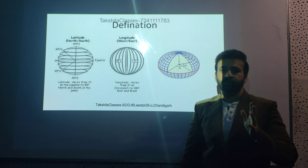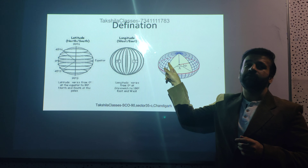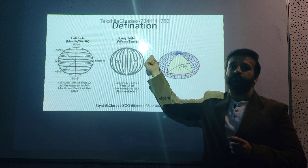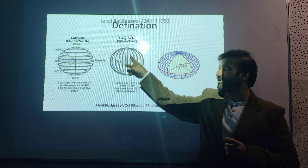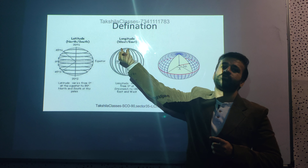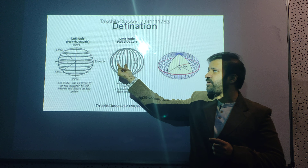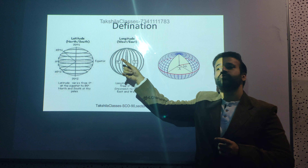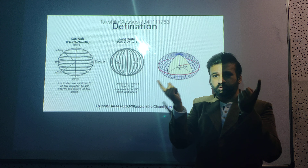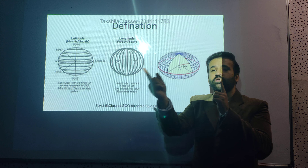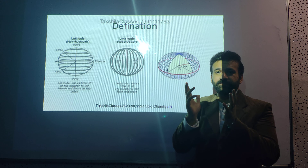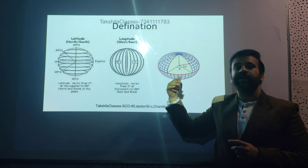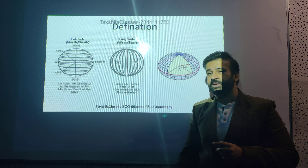On the other hand, longitudes are lines that go from pole to pole. Latitudes never intersect — they are parallel — but longitudes intersect at poles. The area between longitudes varies: it is greatest at the equator and becomes zero at the poles. Longitudes measure west to east and vary from zero to 180 on each side, totaling 360 degrees. Latitudes are called parallels and longitudes are called meridians.